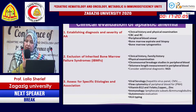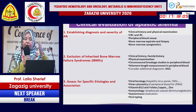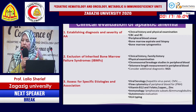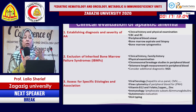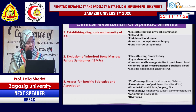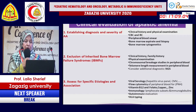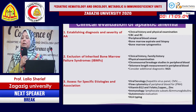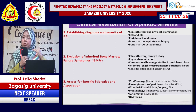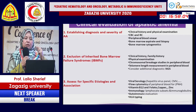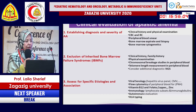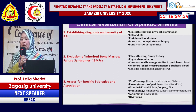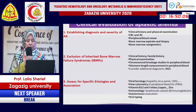Diagnosis of acquired aplastic anemia requires careful history and examination from head to feet to exclude inherited bone marrow failure, as well as investigations such as CBC, reticulocyte count, bone marrow biopsy, and cytogenetic abnormalities. After exclusion of inherited bone marrow failure, investigations to find the etiology of acquired aplastic anemia, such as viral studies including hepatitis viruses, should be performed.